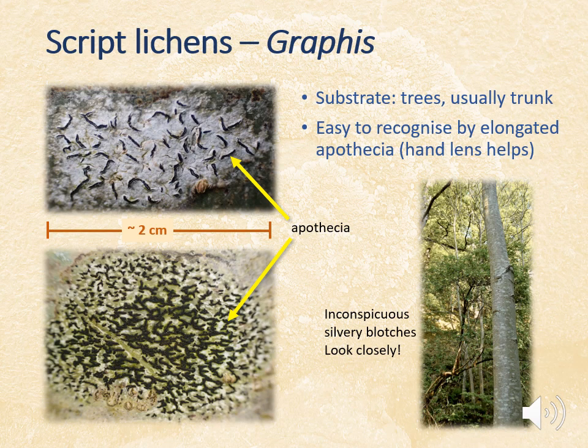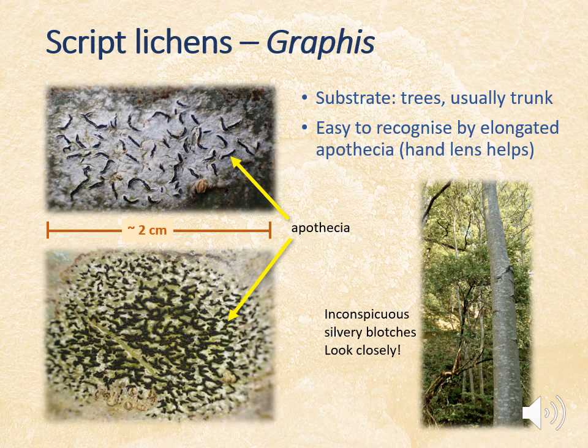Species of Graphis are characterised by these elongate, quite squiggly apothecia — the number of apothecia and the branching helps to identify the species. I'm not actually giving species names for everything here, because in some instances you really need to look at other features under the microscope to identify them to species level. When learning lichens — as with other organisms — it's not always essential to identify to species level; it's fine to become familiar with some of the genera.